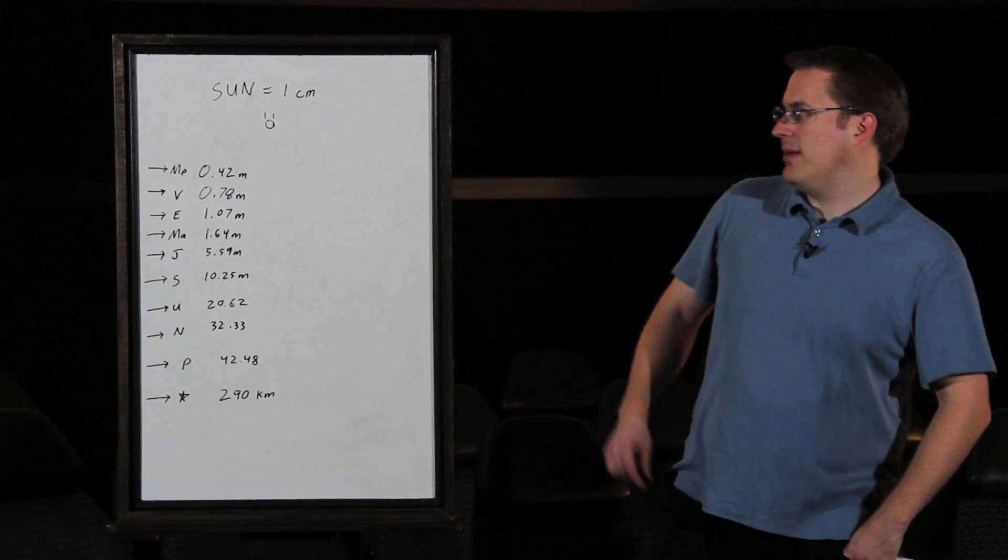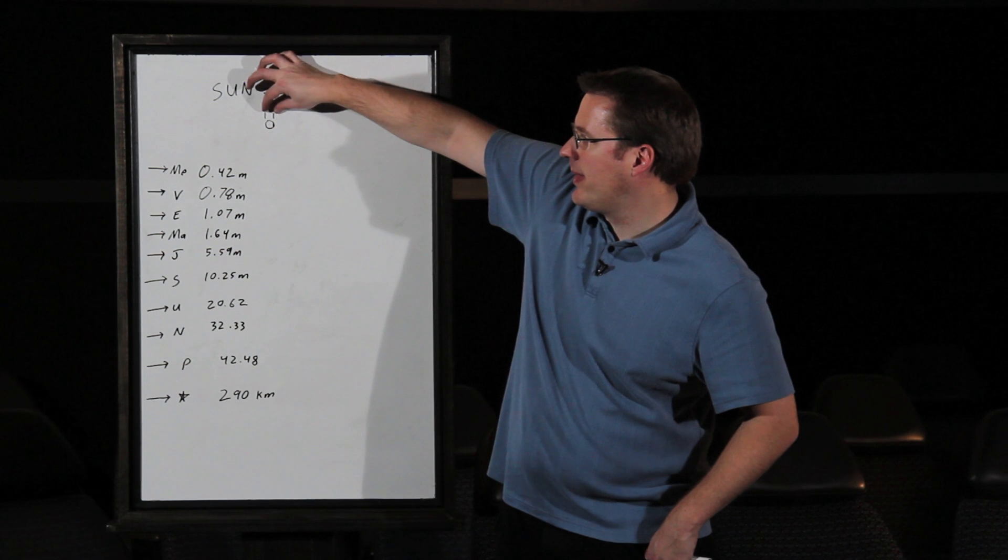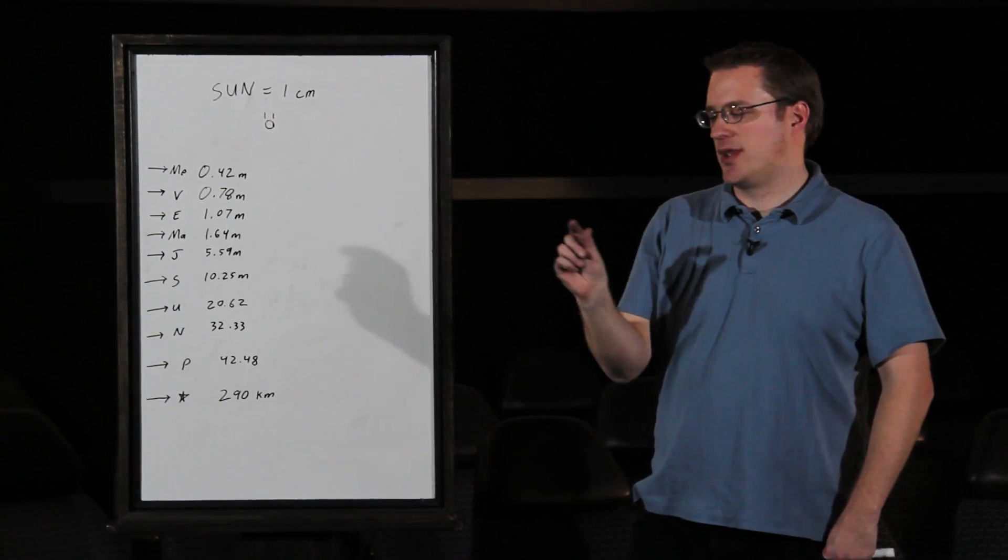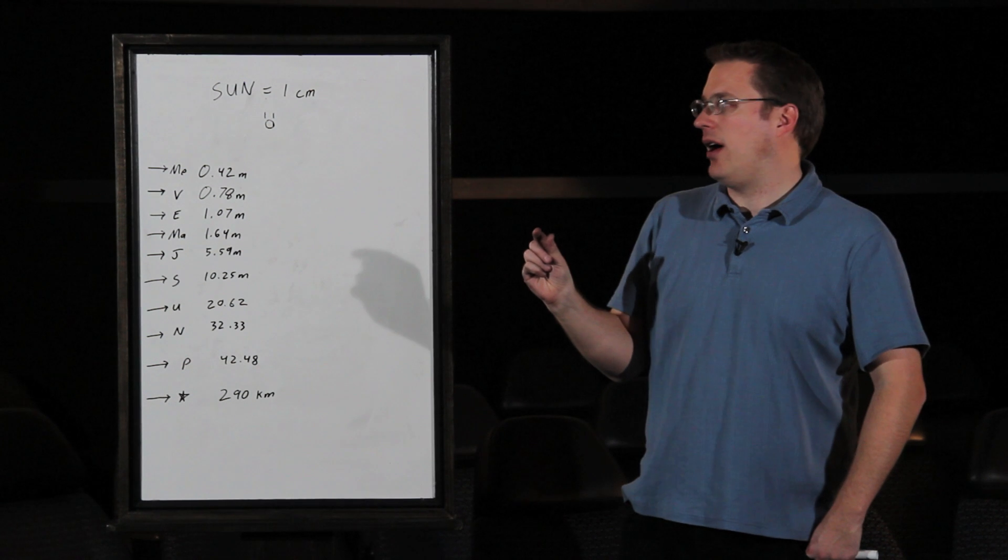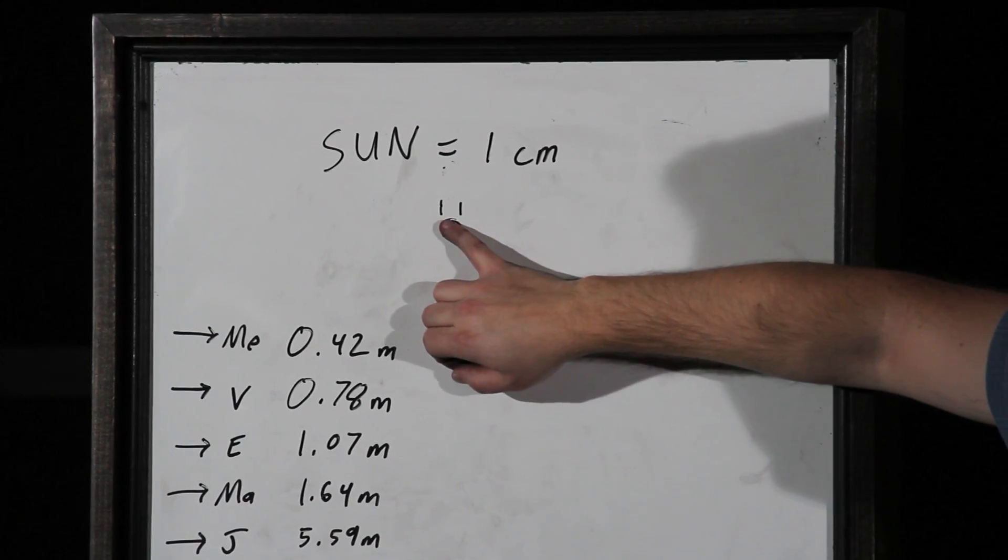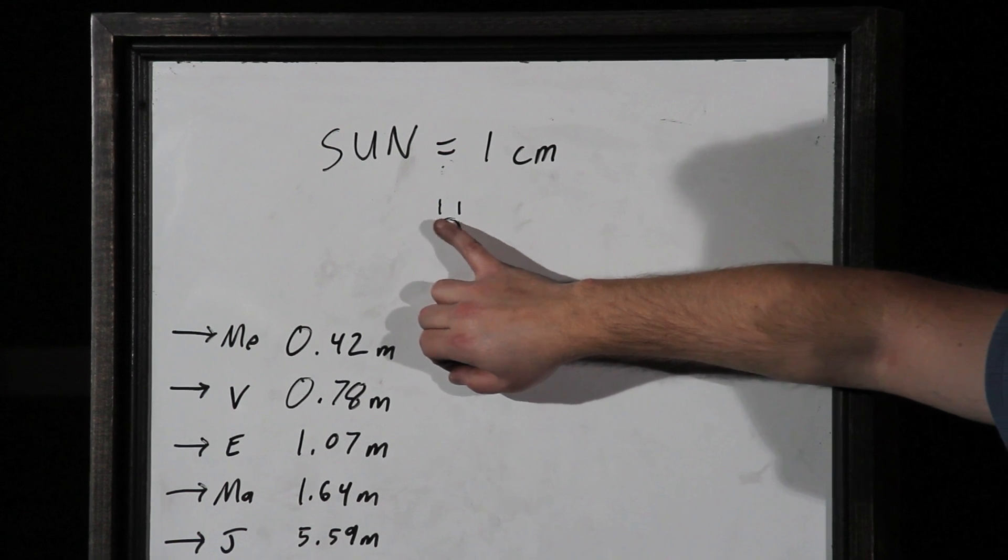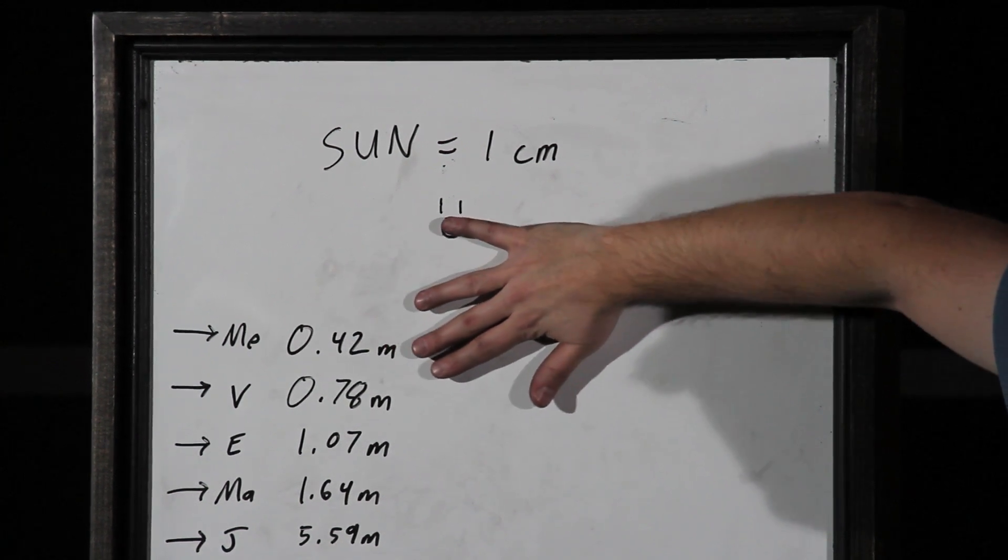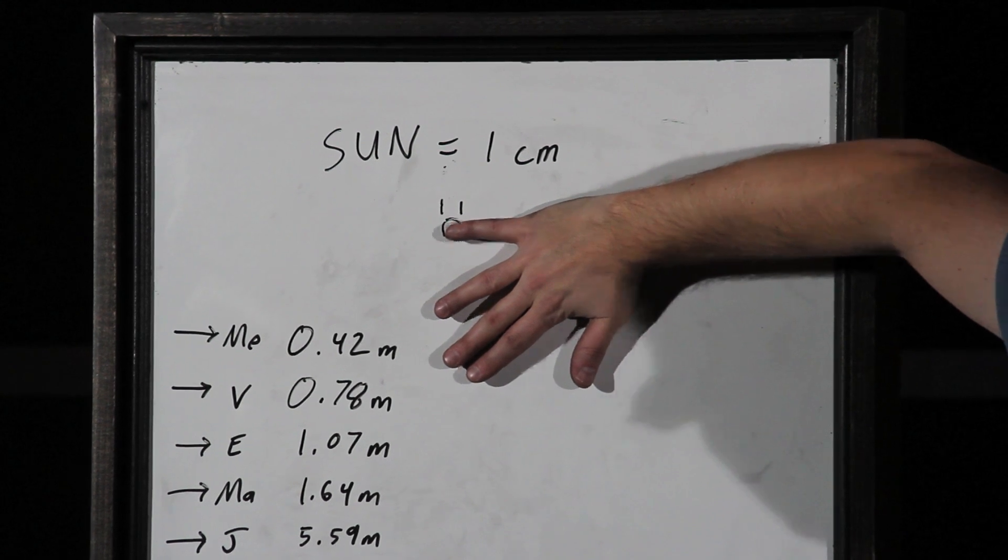A centimeter is not very big. We drew one up here and I decided we couldn't do the entire solar system on that scale. You wouldn't be able to see any of the objects, so instead I decided to put the sun as one centimeter, and you'll notice that's about the same size as my pinky finger. So if you have your pinky finger, that's your sun, and from there we can decide how far everything else is away.